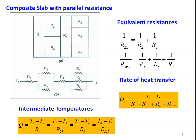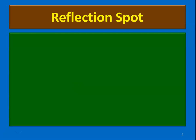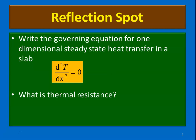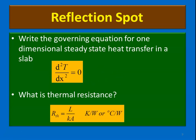This is how the electrical resistance concept is used for solving heat transfer problems. We will solve two problems in this lecture. Before solving, recall what we discussed. Write down the governing equation for one-dimensional steady-state heat transfer in a slab: d²T/dx² = 0. And write the equation for thermal resistance for conduction heat transfer: thermal resistance = L/KA. L/KA is the thermal resistance for conduction heat transfer.